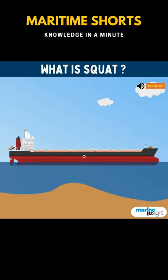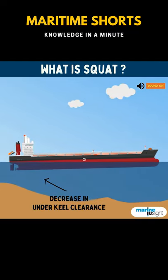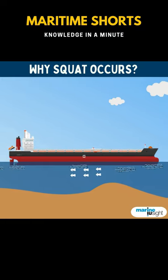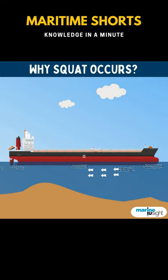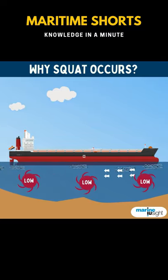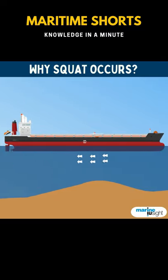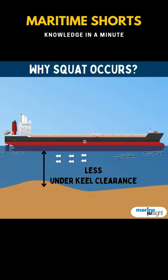Ship squat is the decrease in the underkeel clearance of the ship because of its close proximity with the seabed. When a vessel moves quickly through shallow waters, an area of low pressure is formed under the vessel. This is caused because the water that should normally flow under the hull encounters resistance due to less space between the hull and seabed.